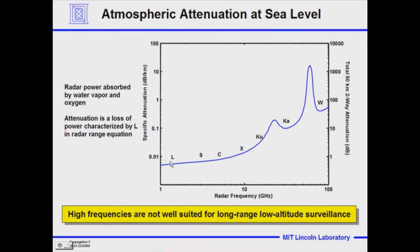So you can see that high frequencies — X, KA, and W band at 95, 35, 16, 10, 5.5, and 3 GHz — are not well suited for low altitude surveillance. This is atmospheric attenuation right at sea level. The actual attenuation you'd get if you were pointing up at an angle, going partially through the higher attenuation at sea level and partially through much less attenuation at higher altitudes, is different from this curve.